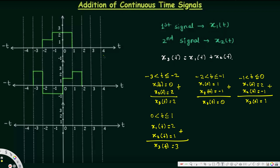Let's move to the next interval: 1 to 2, where t is greater than 1 and less than or equal to 2. At that point, x1(t) is equal to 0 and x2(t) is equal to 2. If we add these two together, x3(t) is equal to 2. Now we have all the intervals so we can plot our new graph.